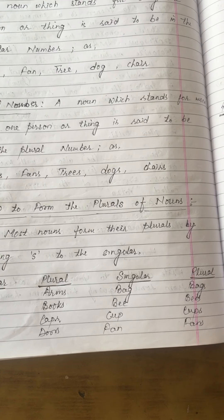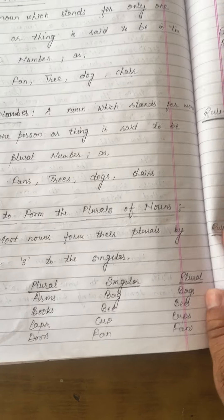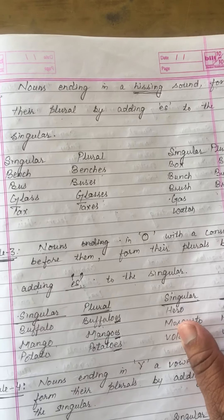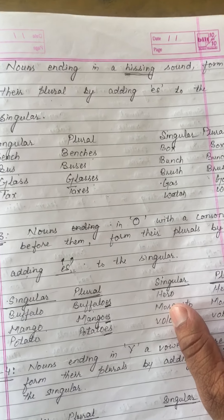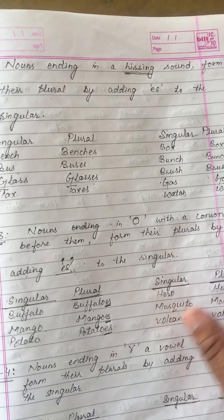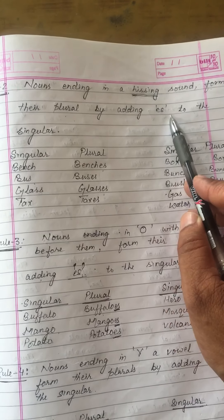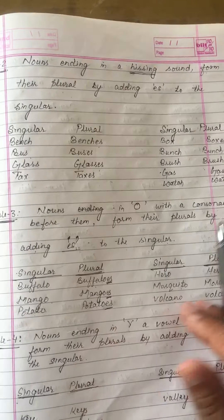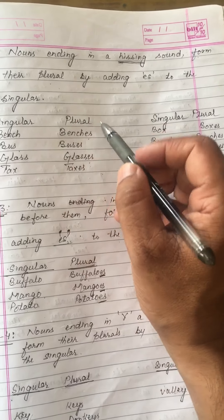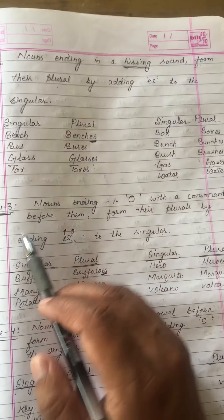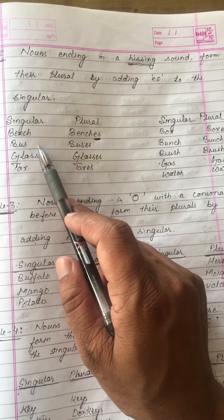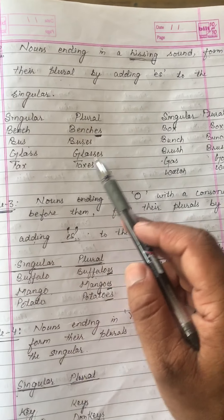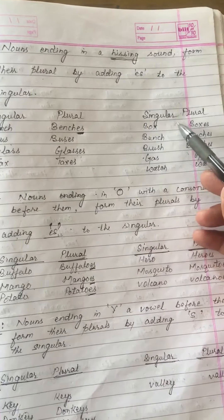Rule number two: nouns which end with a hissing sound form their plural by adding 'es' to their singular form. Examples: bench/benches, bus/buses — bus ending with the hissing sound — glass/glasses. Likewise you can read these examples also.